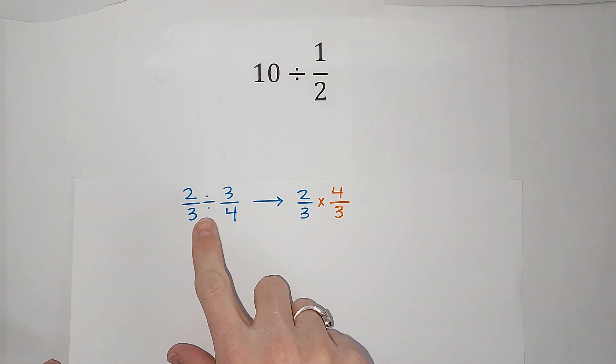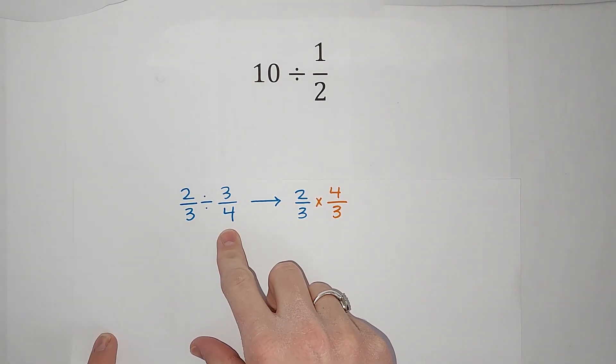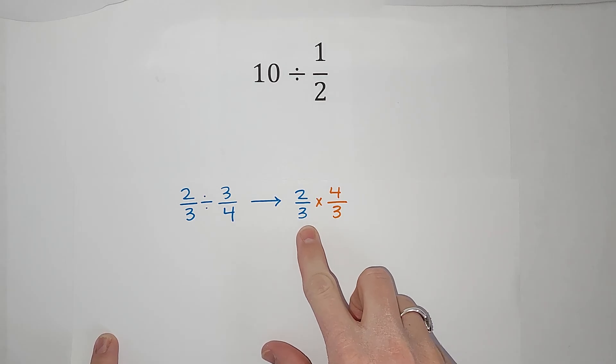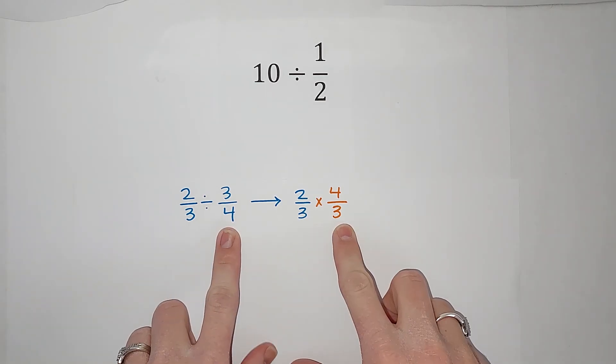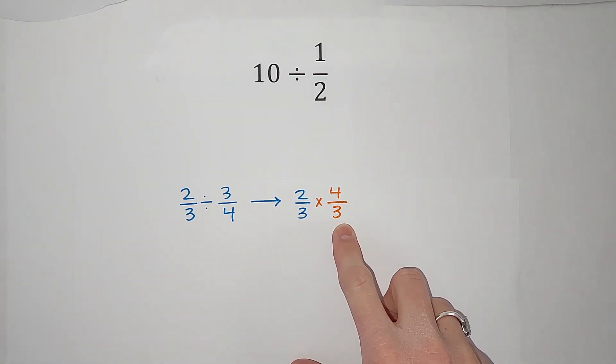So you've probably done this, right? If you have two thirds divided by three fourths, you take two thirds, flip three fourths, the reciprocal is the fancy word, and multiply. But why does that work? I have wondered this a lot. Okay, so we're going to show you.